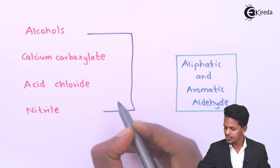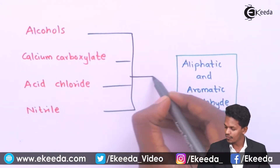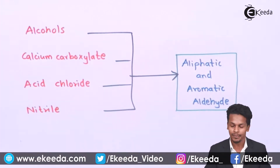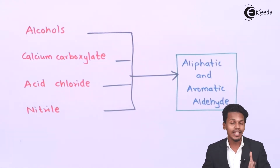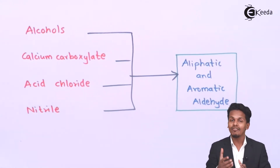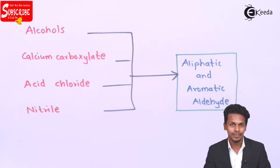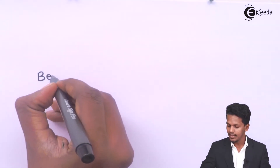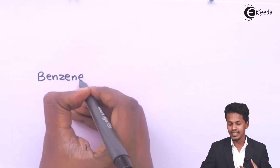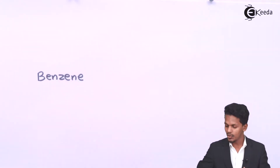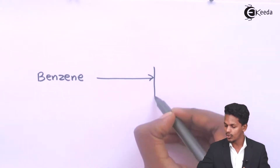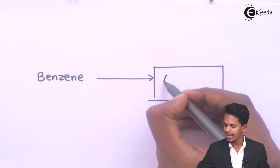These are the different chemicals from which we can easily prepare aliphatic as well as aromatic aldehydes. Now, specifically for aromatic aldehydes, they can be prepared from benzene or other substances like toluene — if we have benzene, we can easily convert it into an aromatic aldehyde.